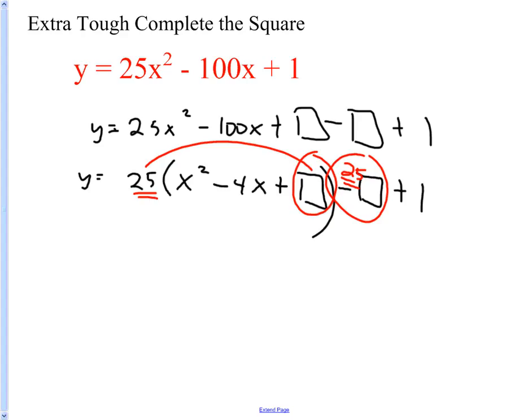Okay, so half and square. I take half of negative four, which is negative two, and I square it and I get four. So 25(x - 2)² and then negative 100 plus one is negative 99.